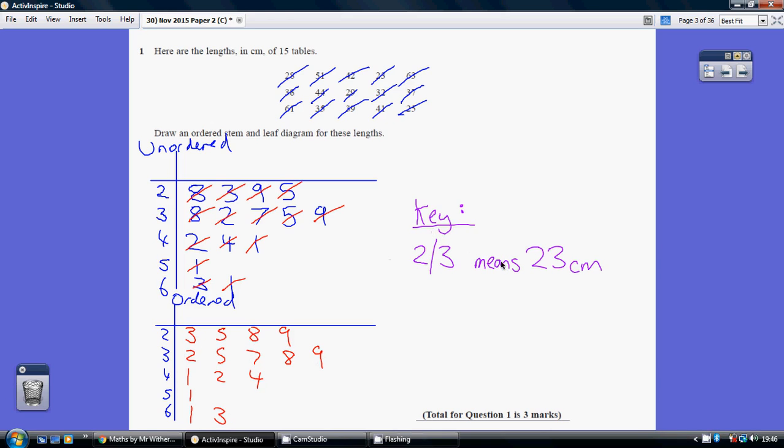For example, 2 stroke 3 means 23 centimeters. So include a key explaining what something means.